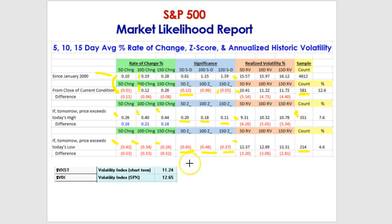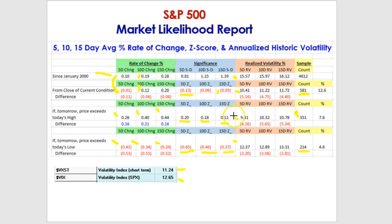Where's the VIX? The 9-day VIX is at 11.24 and the 30-day VIX is at 12.65 — just a little bit higher than what the realized volatilities are. So we're coming back into a relationship where the VIX is higher than what the actual realized volatility typically ends up being.